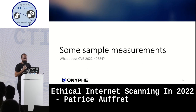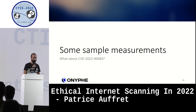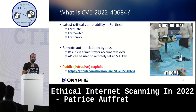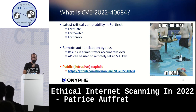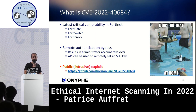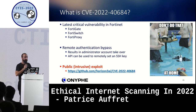With that in mind, I'll speak about the latest Fortinet vulnerability — CVE-2022 — which appeared roughly one to two weeks ago. It affects Fortinet products like FortiGate, FortiSwitch, and FortiProxy. It's a remote authentication bypass, and if exploited, you get admin access on the device — which is pretty bad on a firewall or switch. The management API can be used to remotely set an SSH key. There is a public intrusive exploit made by the people who discovered the vulnerability. If we search for FortiGate devices exposed on the internet, we find approximately 1.1 million exposed devices today.